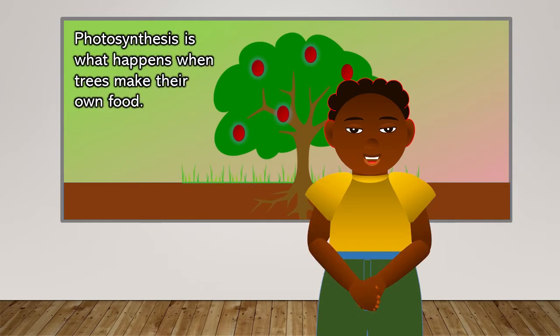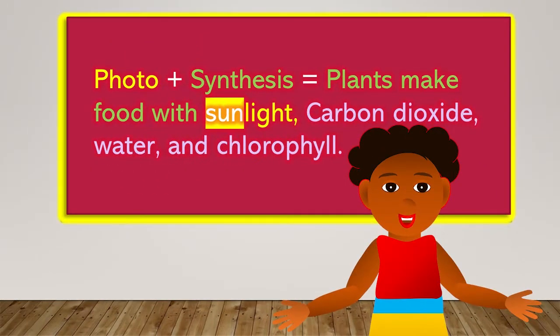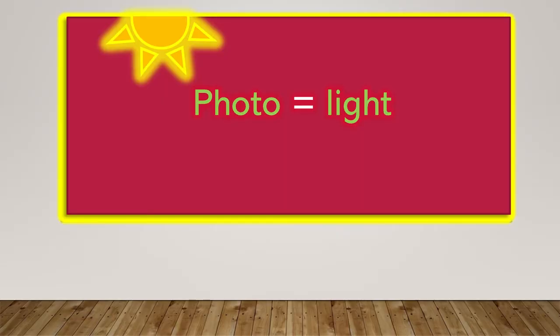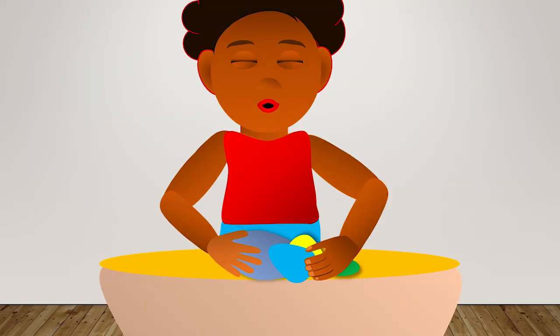Photosynthesis is what happens when trees make their own food. Photo plus synthesis equals plants make food with sunlight, carbon dioxide, water, and chlorophyll. Photo equals light. Synthesis equals combining small things into one big thing.